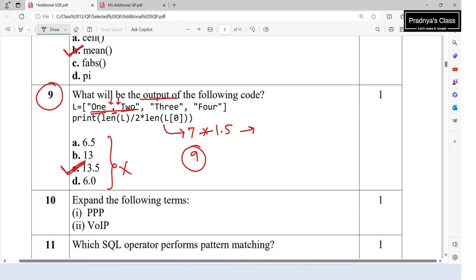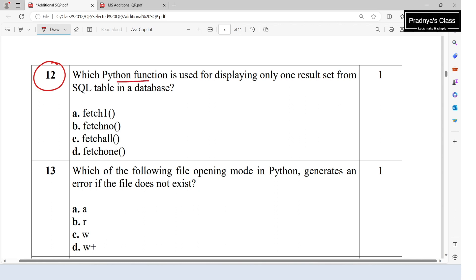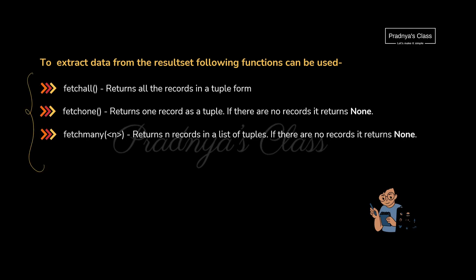The tenth question asks to expand the terms: PPP is Point-to-Point Protocol and VoIP is Voice Over Internet Protocol. The eleventh question asks which SQL operator is used for pattern matching — the answer is the LIKE operator. The twelfth question asks which Python function displays only one result set from a SQL table. We have three fetch functions: fetchmany, fetchone, and fetchall. fetchall returns all records, fetchone returns a single record, and fetchmany allows specifying the number of records.